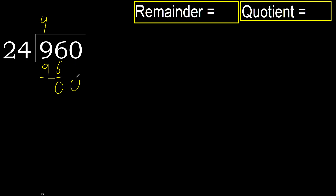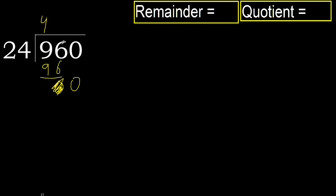Next, bring down. Eliminate 0 on this side: 0. 0 is less, therefore next — there is no number, therefore finish it. Complete — always complete with 0. Complete because here we finish it with this number.